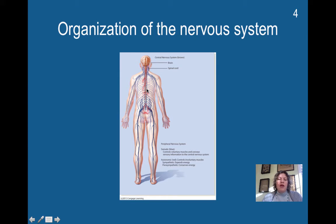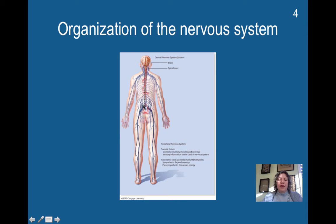The somatic is what you would think of when you think of controlling the periphery. It controls voluntary movement and conveys sensory information to the central nervous system — this is where information comes in from the environment. The autonomic, here in red, controls involuntary muscles. This includes the sympathetic, which expends energy, and the parasympathetic, which conserves energy. The sympathetic expends energy — that's your fight or flight response, so you get ready and you're prepared for action. The parasympathetic calms you and prepares you for rest to conserve, because you cannot be expending energy all of the time.